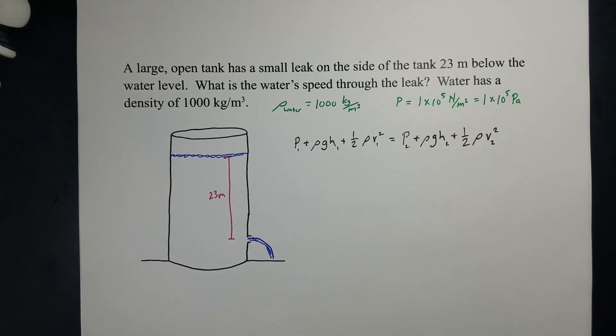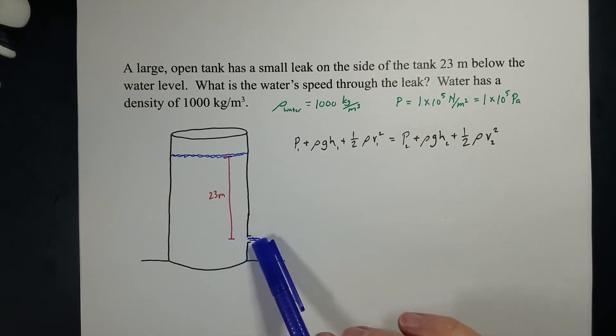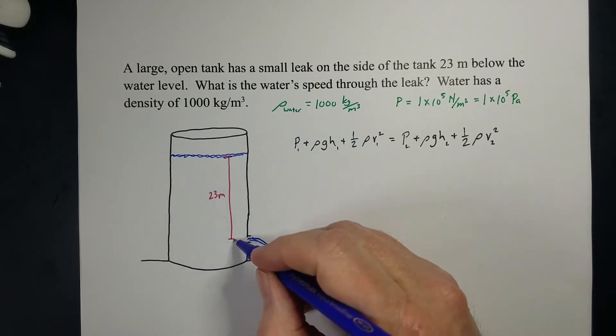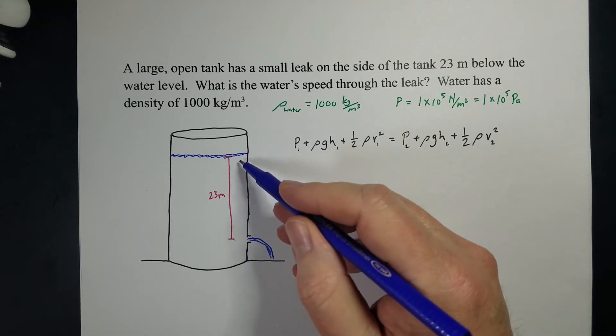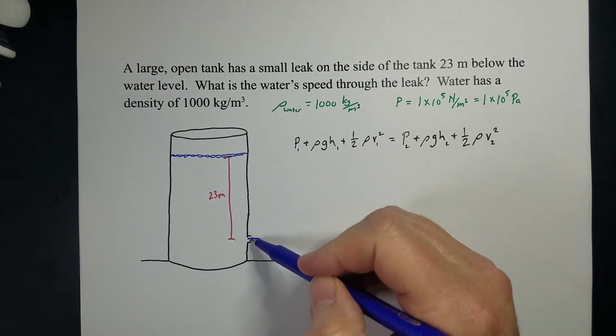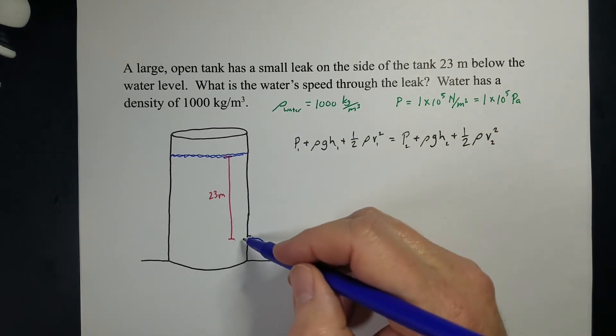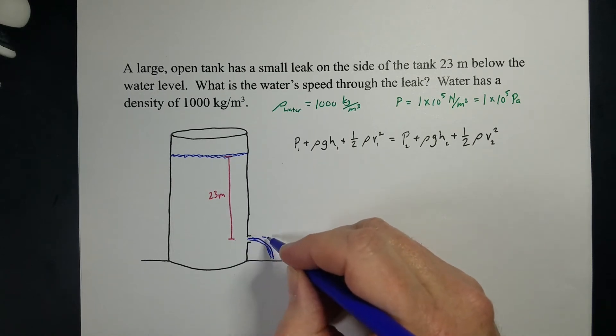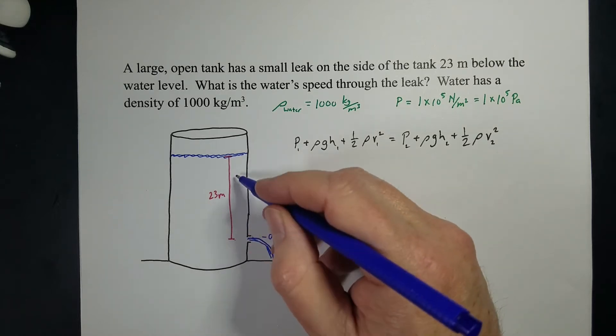Both sides are open to the air. First of all, we need to decide what we're going to do with the height in our problem. My suggestion is make where the leak is a height of 0, and then the water level is going to be a positive height above that. You can make this 0, and then the leak will be at a negative distance. I prefer to keep positive numbers, so I'm going to start my leak here and say this is 0 meters right there. And so my water level is 23 meters above that.